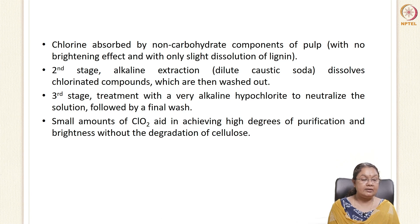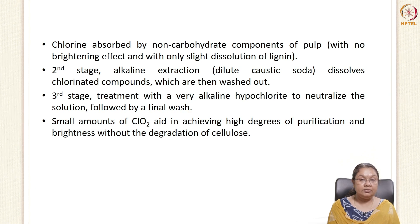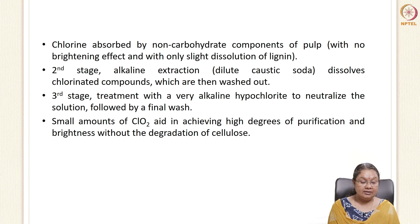In the second stage, alkaline extraction is done using dilute caustic soda, which dissolves the chlorinated compounds and they are washed out. In the third stage, alkaline hypochlorite is used to neutralize the solution, followed by a final wash. A small amount of chlorine dioxide is then used to achieve a high degree of purification and brightness without disintegrating the cellulose. This completes the multi-stage bleaching system.